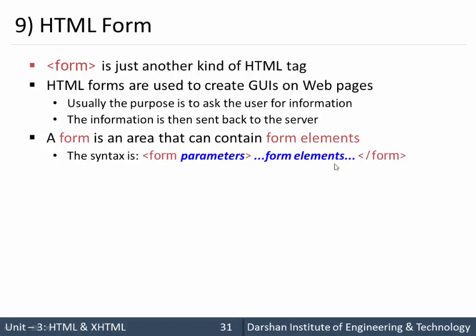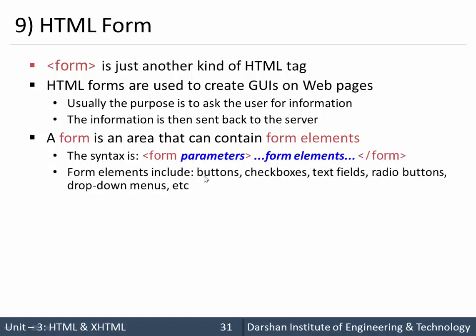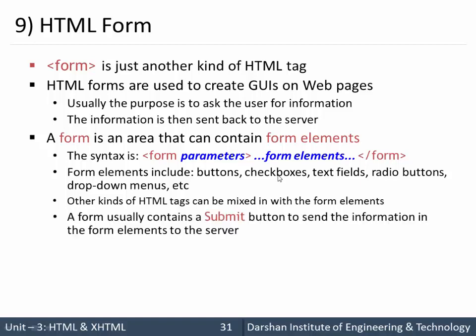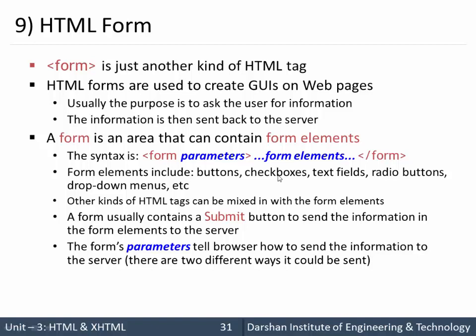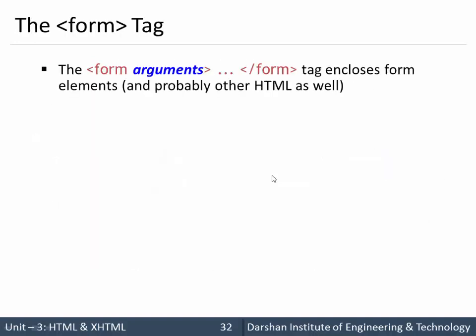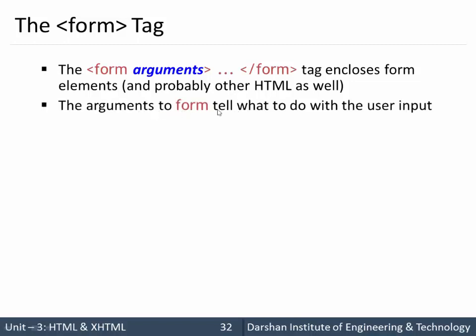Inside the start and close form tags we have form elements. Form elements include buttons, checkboxes, text fields, radio buttons, dropdowns, and many more. It also can include other HTML tags like the table tag. A form usually contains a submit button which is used to send data to the server. The form parameters tell the browser how and where to send the data — there are mainly two methods: GET and POST.